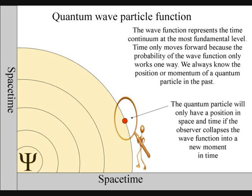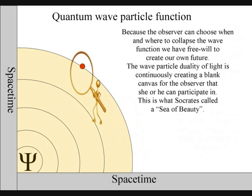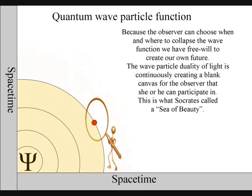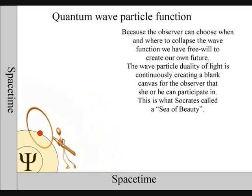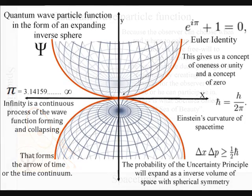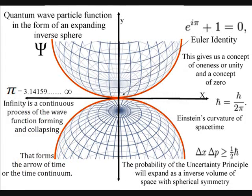In this theory, we have physical starting point to any infinite series. We can choose when and where to collapse the quantum wave particle function, forming new particles in space and new moments in time. This will form a new wave function of future potential that will expand out from zero in all directions along the x and y axis as part of an infinite series.